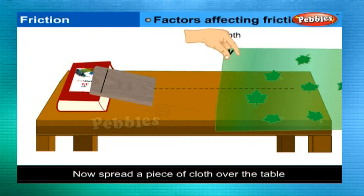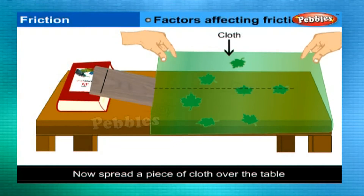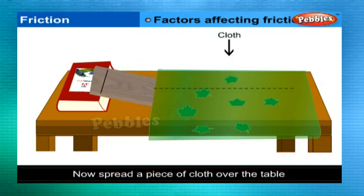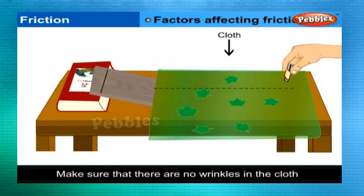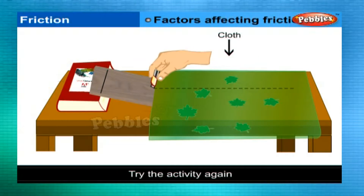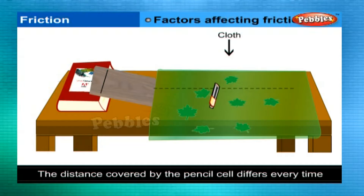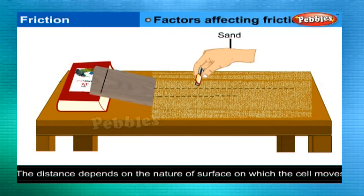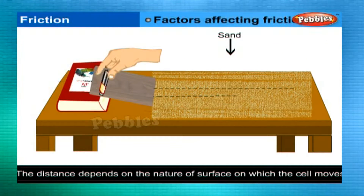Now, spread a piece of cloth over the table, making sure that there are no wrinkles in the cloth, and try the activity again. The distance covered by the pencil cell differs every time. The distance covered depends on the nature of the surface on which the cell moves.